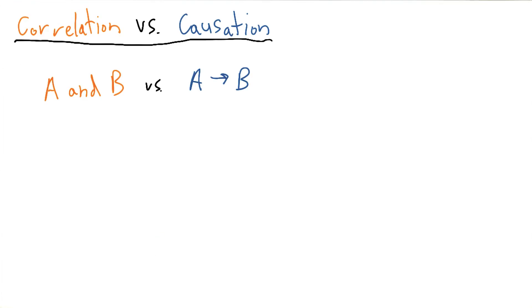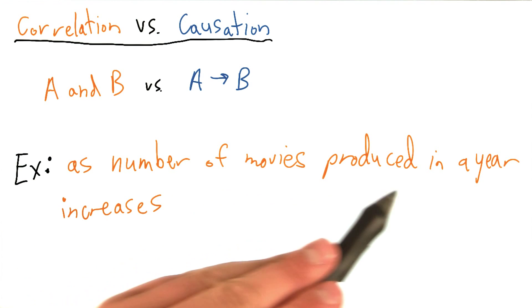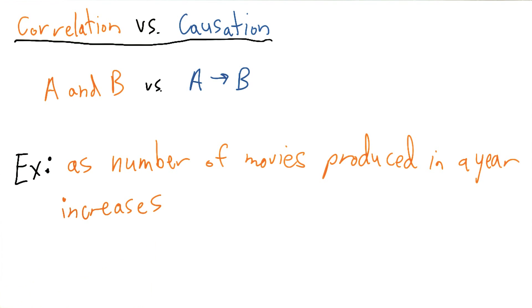To make this a little bit more concrete, I want to go through a simple example. Let's say that as the number of movies produced in a year increases, the observed incidence of cancer in a population increases as well.